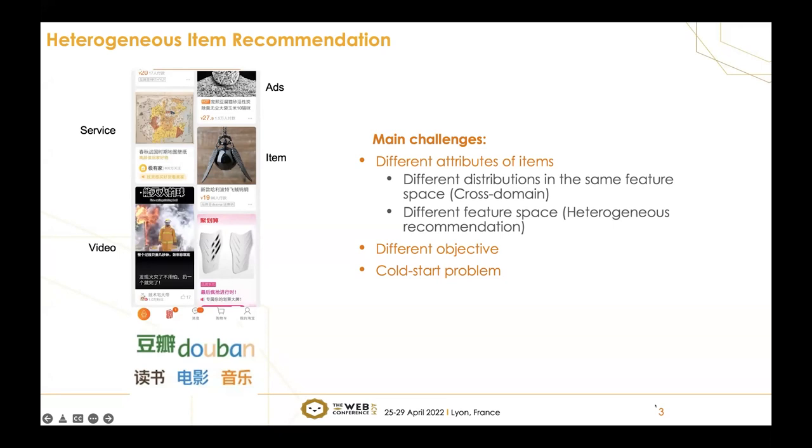There are three main challenges here. Firstly, the items have different attributes. Sometimes the features of items are in different distributions but in the same feature space, also called cross-domain recommendation. In our work, we aim to solve a more difficult problem where the attributes are in different feature spaces. Besides, the objective could also be different, and the cold start problem becomes more important.